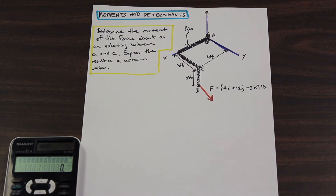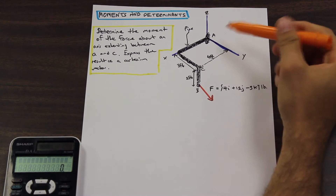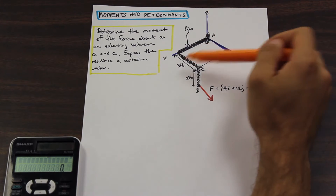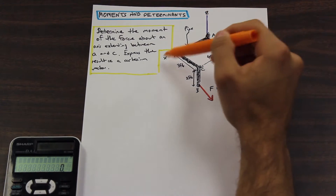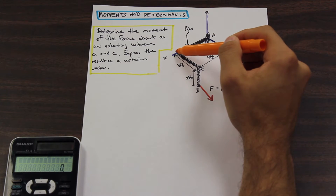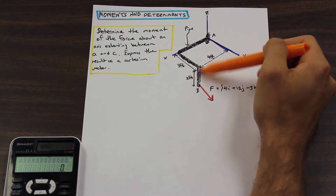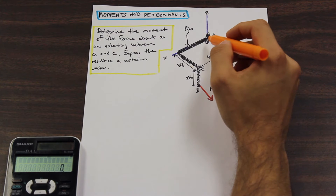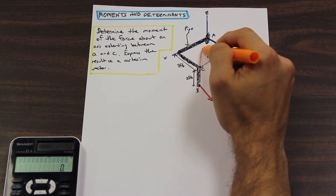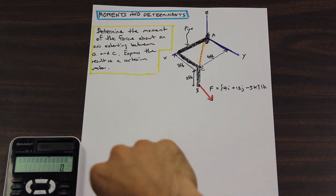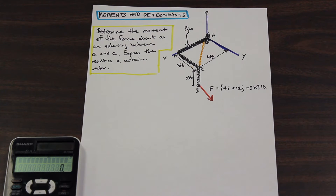The question asks: determine the moment of the force about an axis extending between A and C. So let's take a look at our diagram. We have point A here. We have our z, x, y plane, and we have a pipe system that extends along the x direction, extends along the y plane, and then goes down 2 feet. The question is asking us to determine the moment of the force about an axis extending between A and C, which is this orange line — and express it as a Cartesian vector.